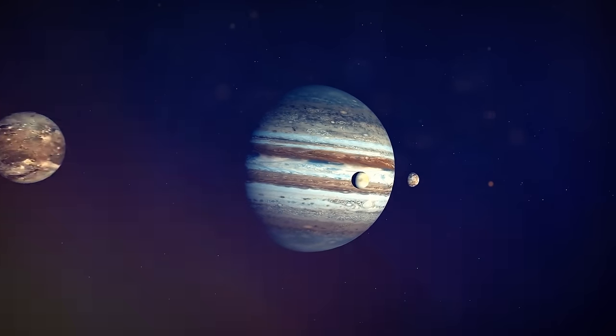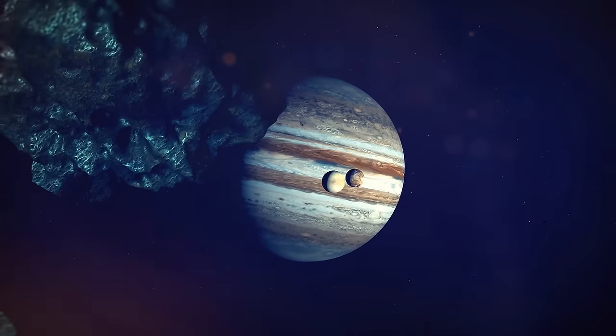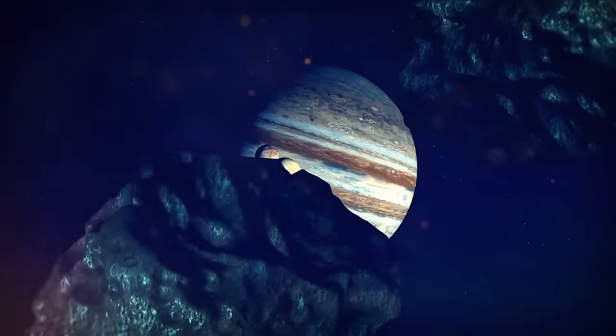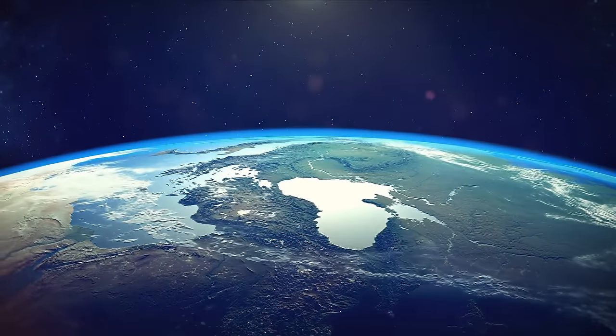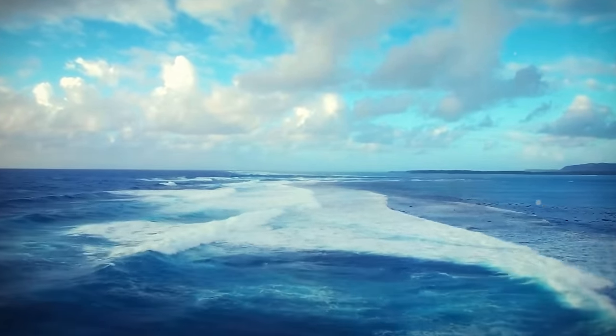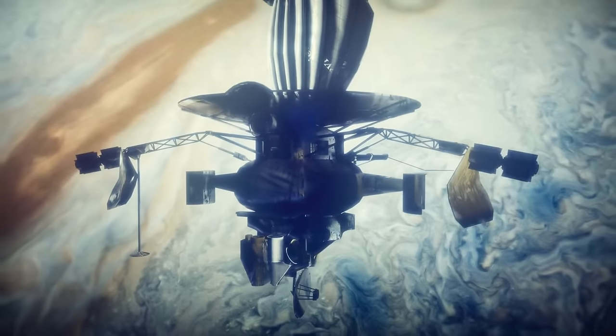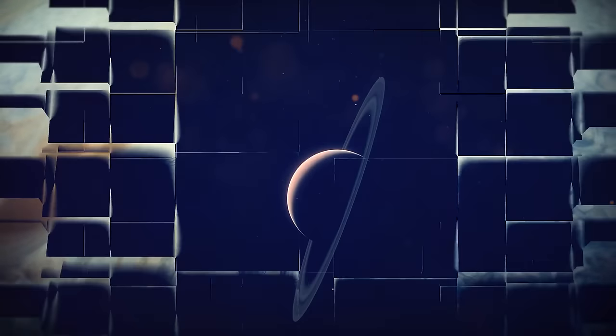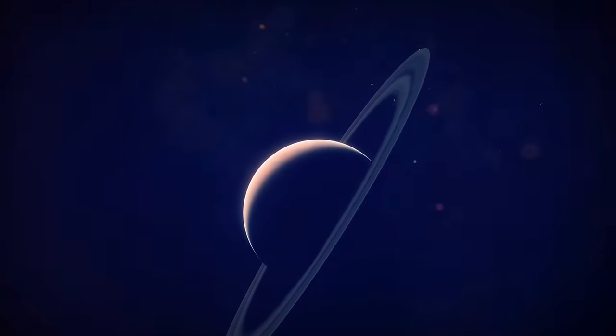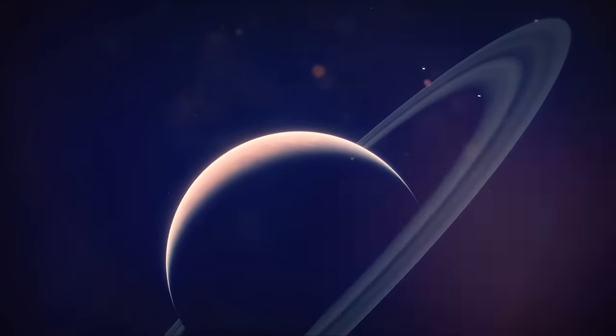Jupiter can still lob one to two icy asteroids at the inner planets from time to time. But when our planet was younger, this could have been one of the processes that formed the oceans on Earth. But Jupiter is much calmer these days.